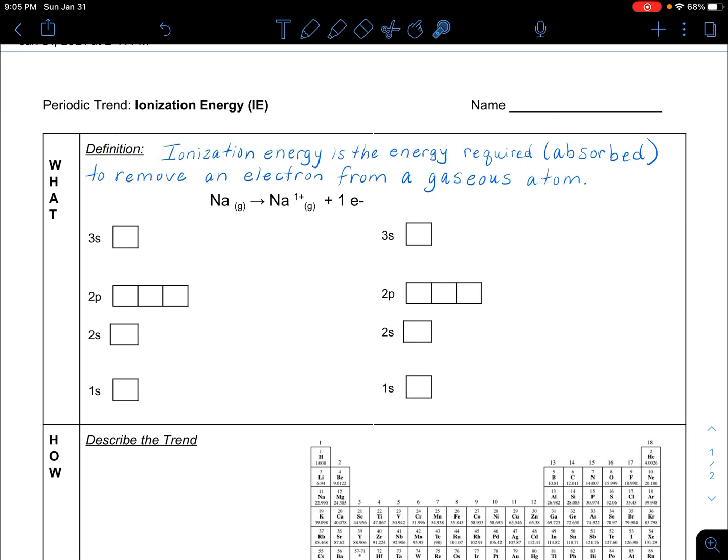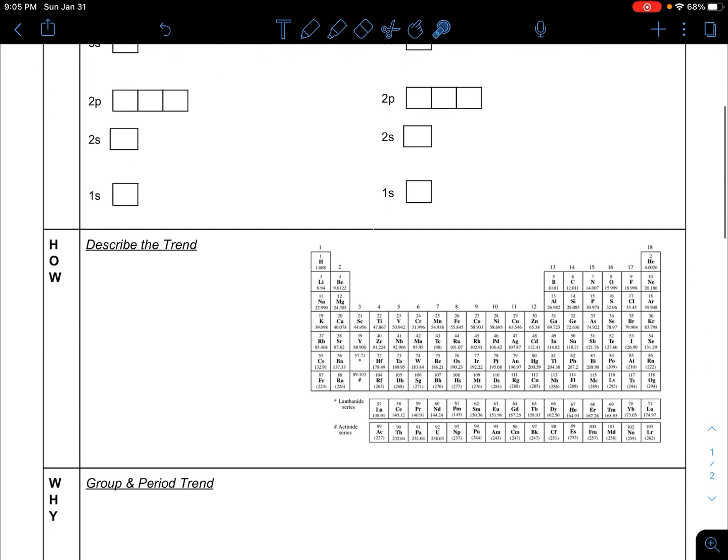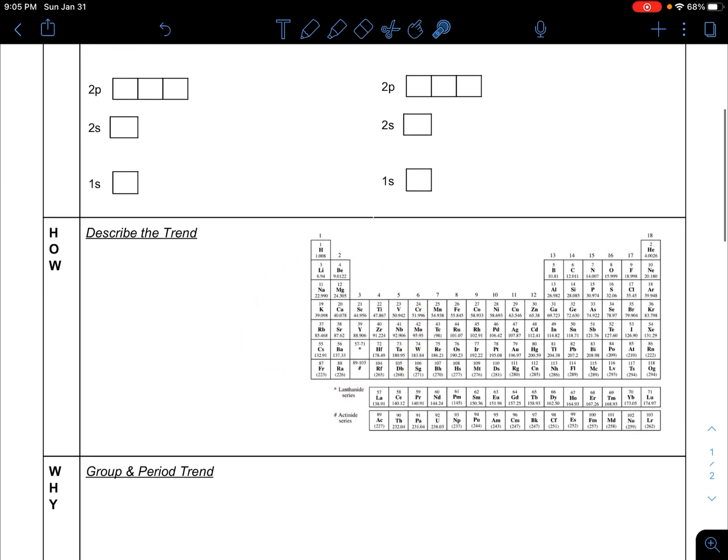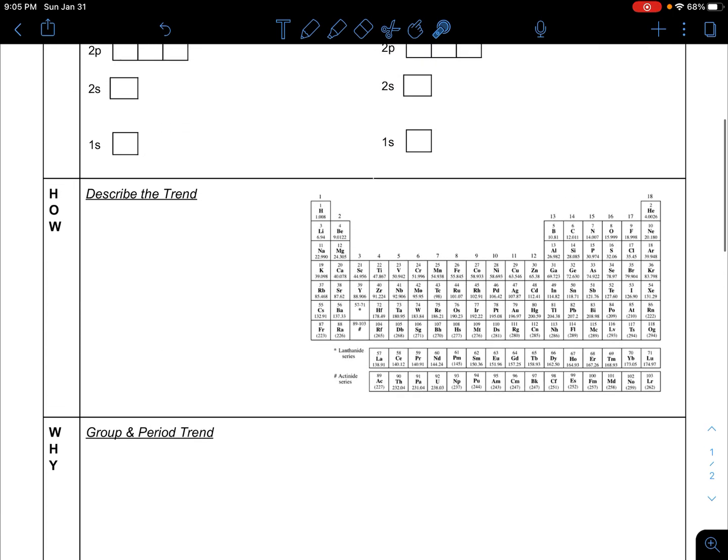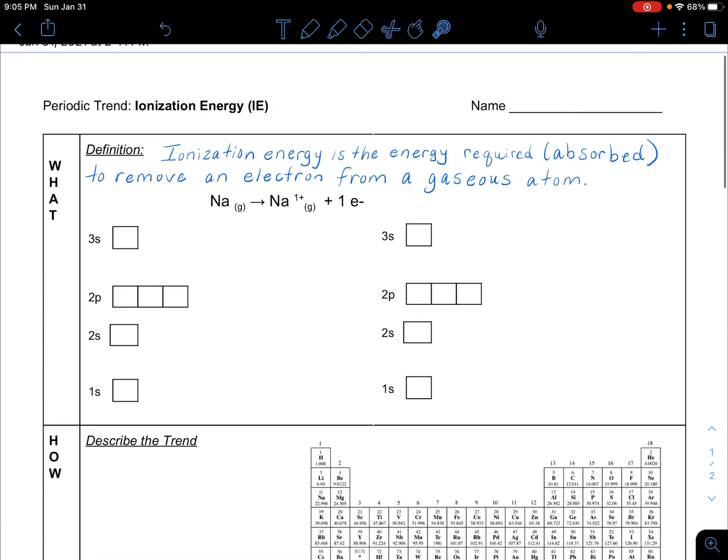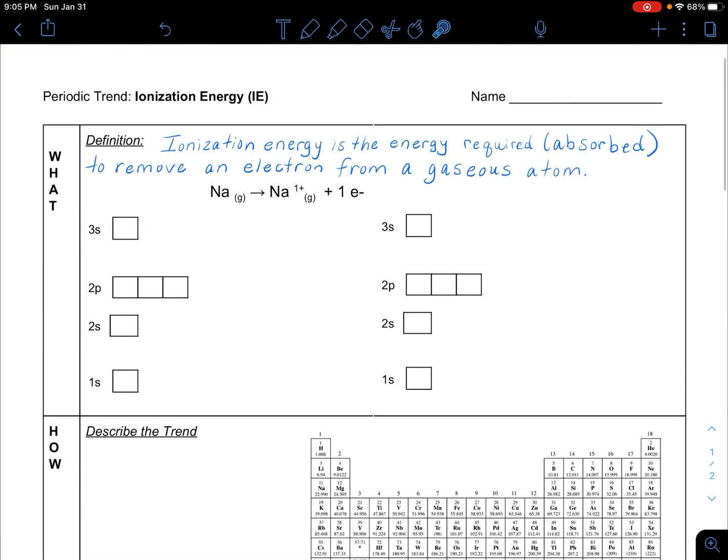We're going to go through the definition of what ionization energy is, then we're going to describe the trend, and then we're going to do an explanation of that group and period trend together. I'm going to make an advanced version of this video which will cover first, second, and third ionization energies as well as the group and valence trend. But in this video, I'm going to keep it simple and just worry about ionization energy and the general trend of ionization energy.